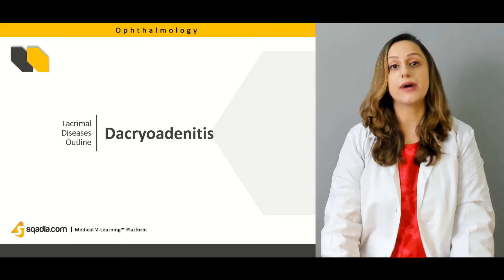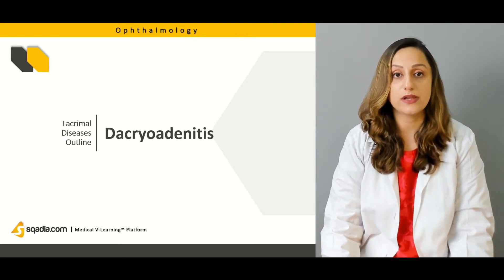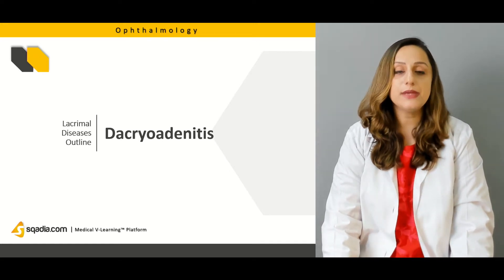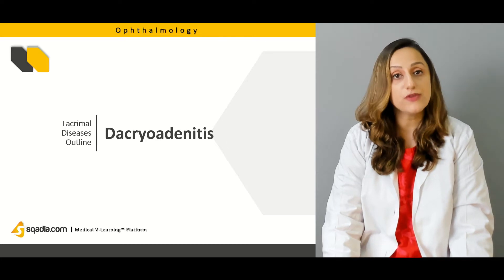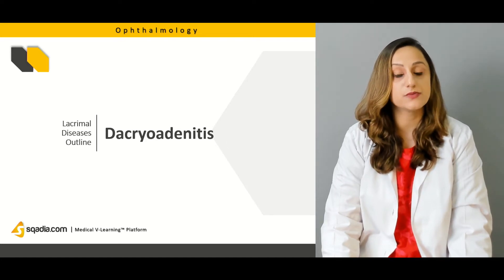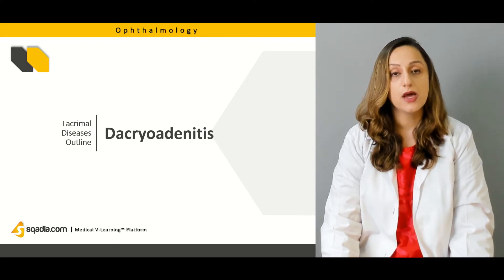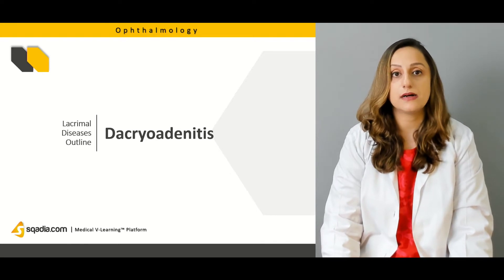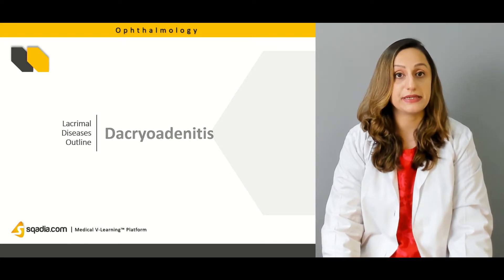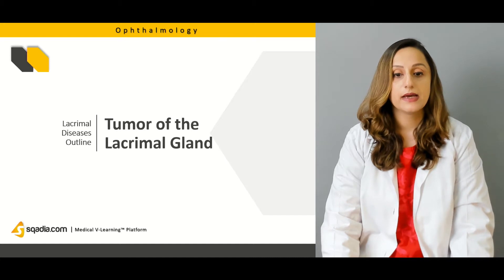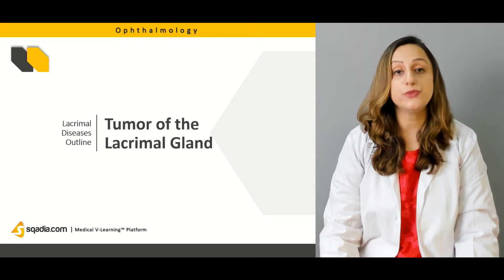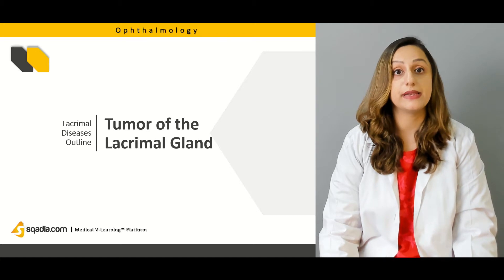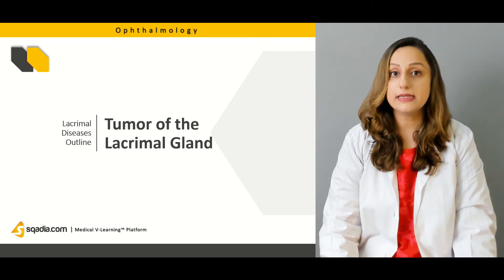The conditions that can arise in the lacrimal apparatus include infectious states. It can be a primary infection of the lacrimal gland or a secondary infection acquired from neighboring structures — whatever the case, it is termed dacryoadenitis. We can also come across tumors of the lacrimal gland, either benign or malignant.